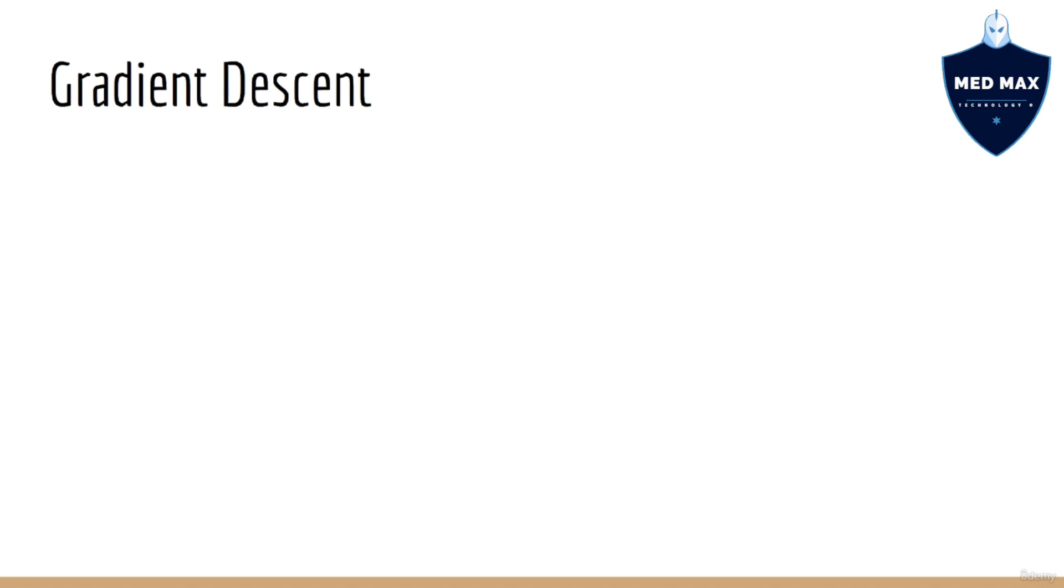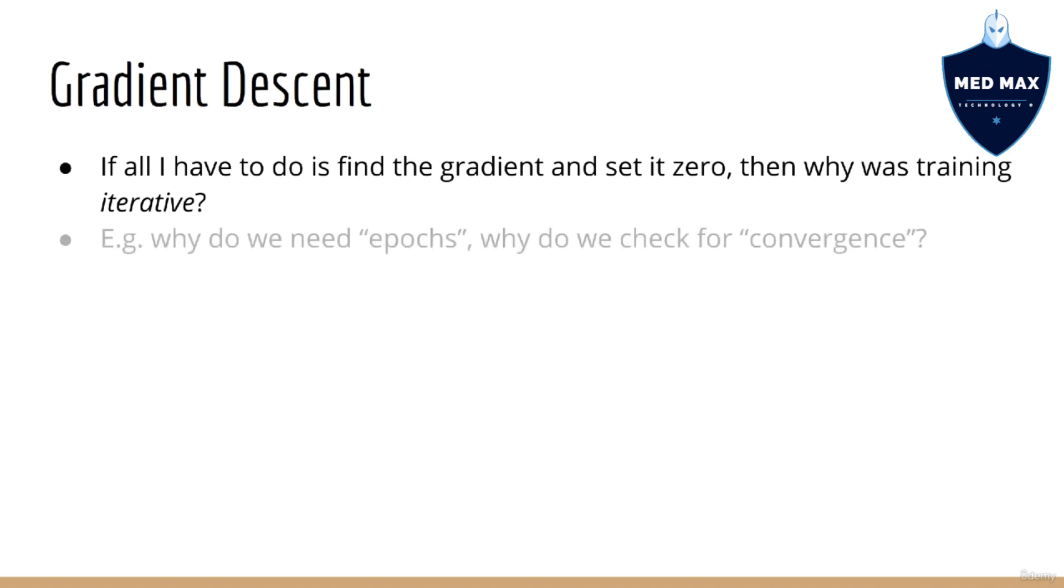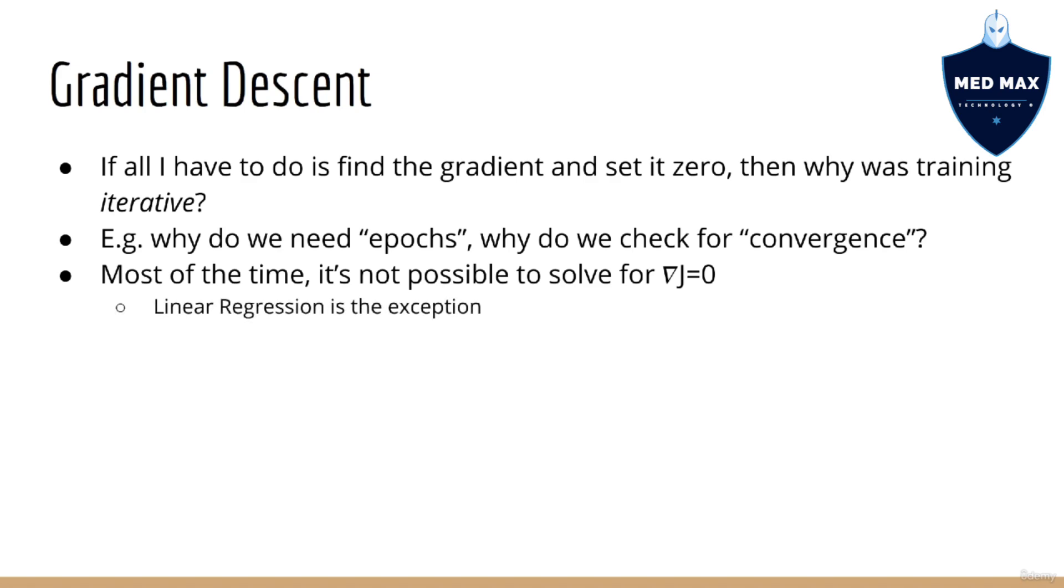At this point, you might be wondering, if all I have to do is find the gradient and set it to zero, then why in our previous code did it involve an iterative training process? Recall that we had to specify the number of epochs to train for, and this resulted in a plot of loss per iteration, which we could check to confirm that the training algorithm converged nicely. Well, in actuality, it's not possible to actually solve for the equation that you get when you set the gradient to zero, most of the time. The one exception to this, in this course at least, is linear regression, where we can solve it. We call the solution an analytical solution, or a closed-form solution. Basically this means that we can express the optimal value of w and b using an equation.